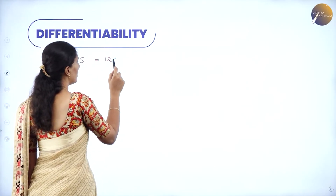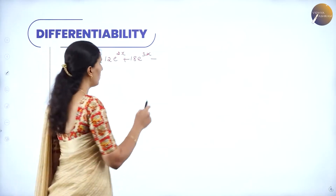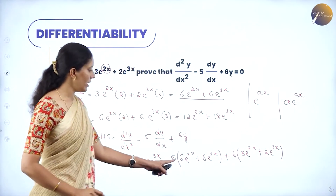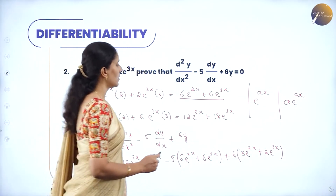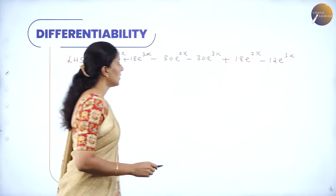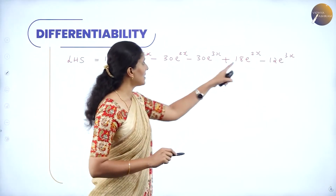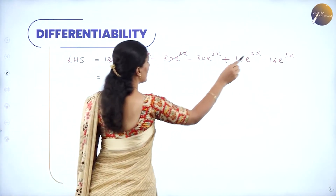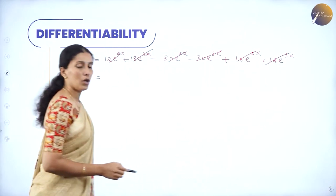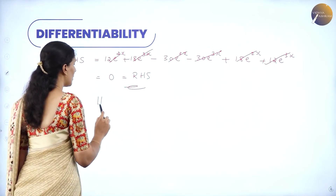Collecting like terms: 12e^(2x) − 30e^(2x) + 18e^(2x) = 0, and 18e^(3x) − 30e^(3x) + 12e^(3x) = 0. So LHS = 0 = RHS. Hence proved.